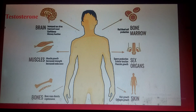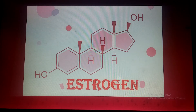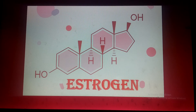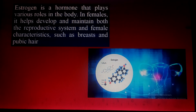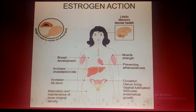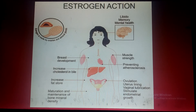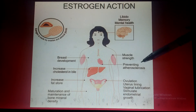Estrogen is the female hormone. As you can see here, the estrogen molecule also has four rings, since all steroids are made up of four rings. Estrogen plays various roles in the body: in females it helps develop and maintain the reproductive system and female characteristics such as breasts and pubic hair. Its functions include breast development, muscle strength, and increasing cholesterol in bile.